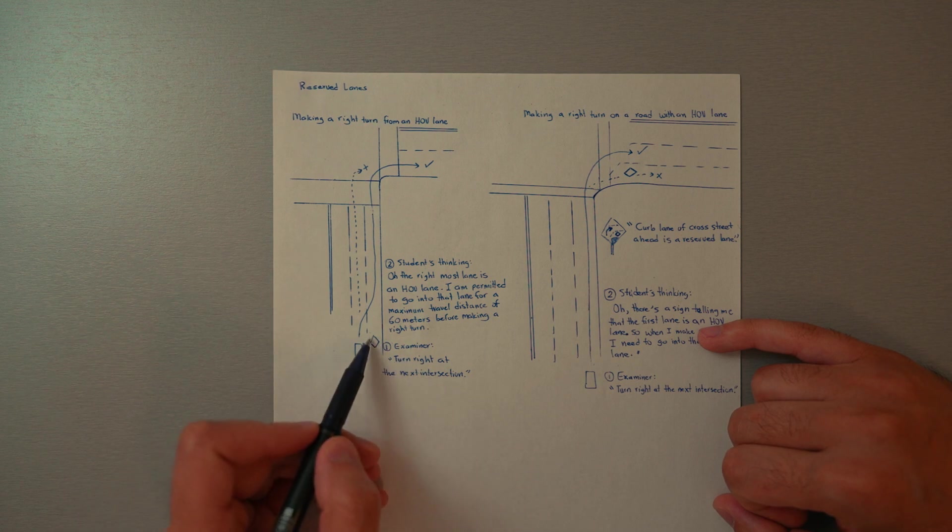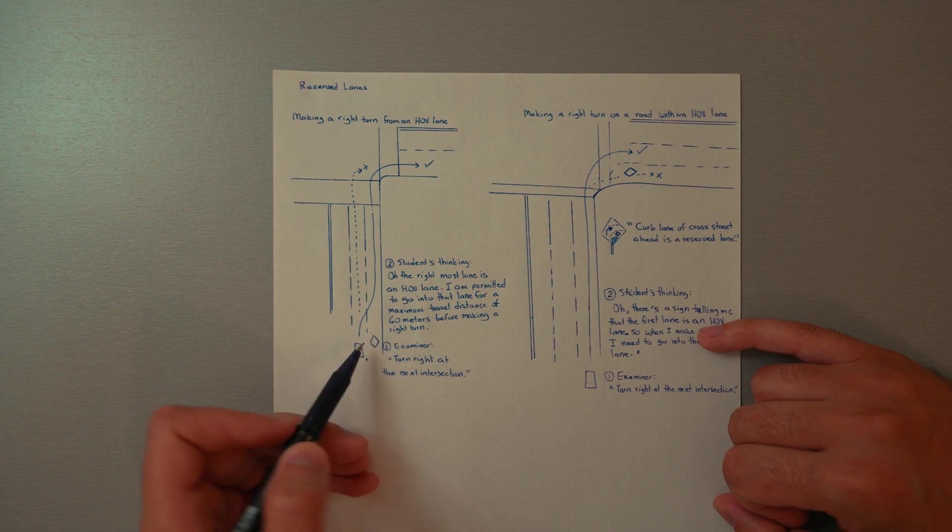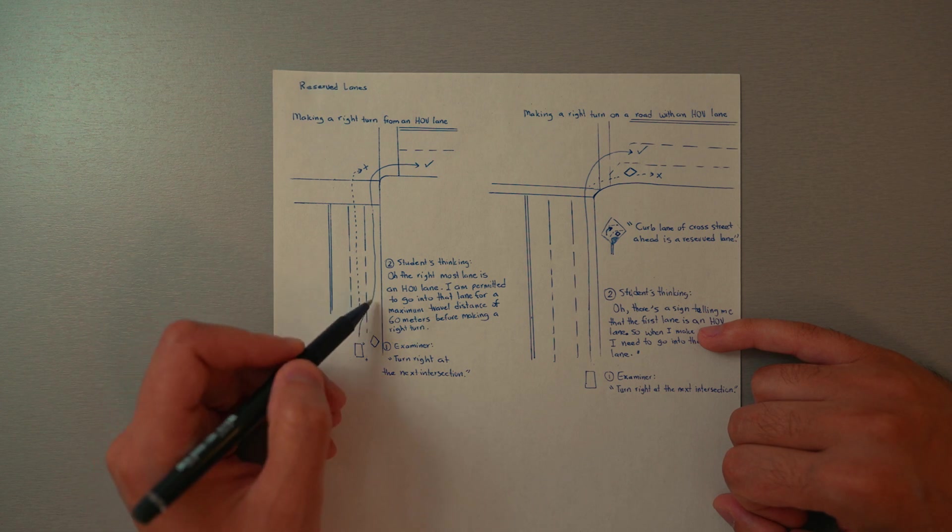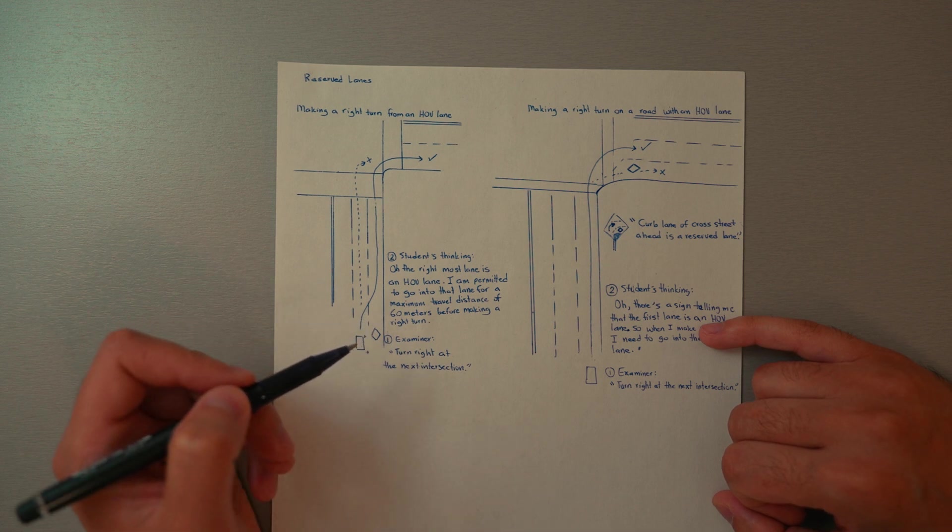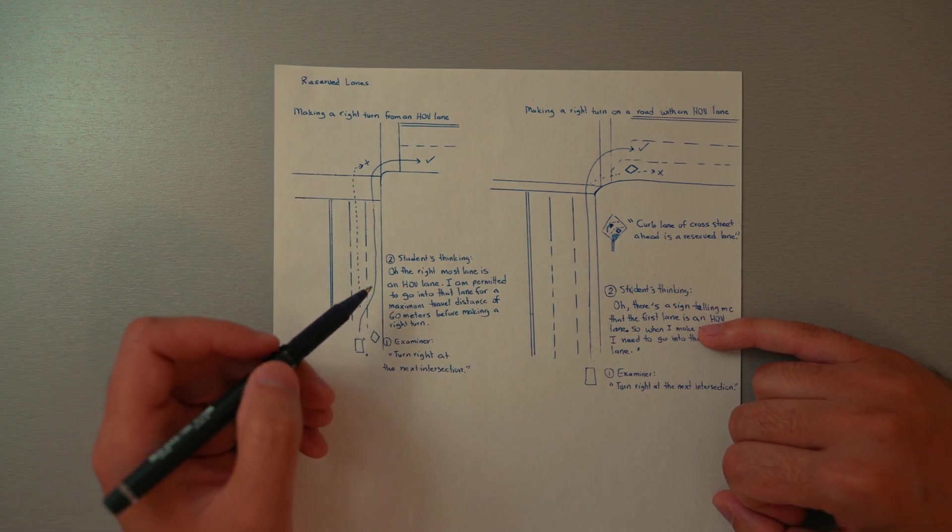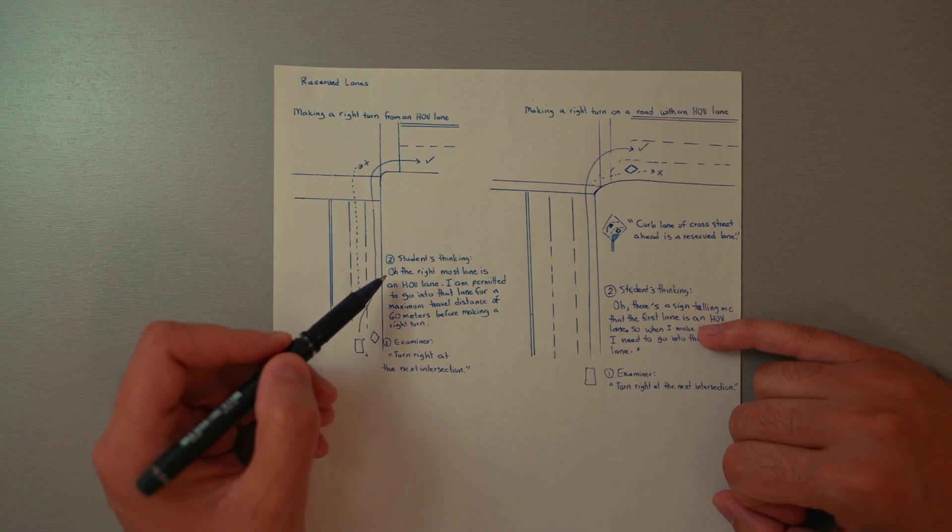But no more than a block away. So the student should be thinking, all right, the rightmost lane is an HOV lane. I'm permitted to go into that lane for a maximum travel distance of 60 meters before making a right turn.